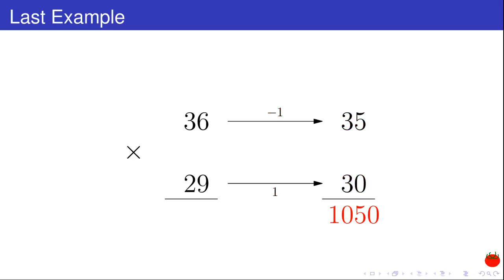The product 35 times 30 is equal to 1,050. The difference 36 minus 30 is equal to 6. This difference times the offset is equal to minus 6.